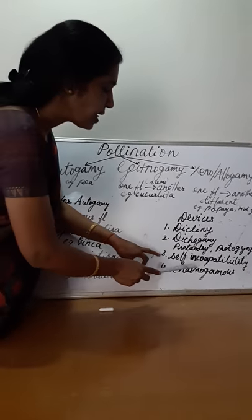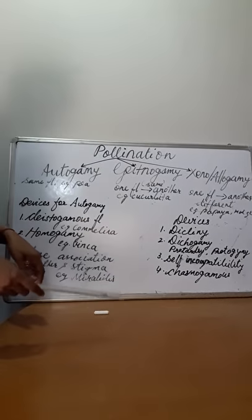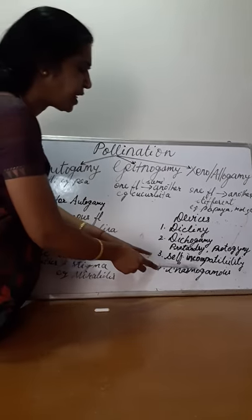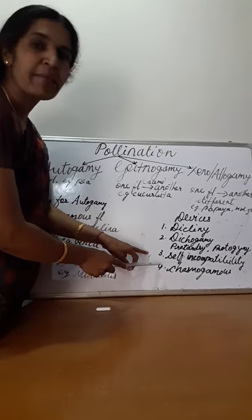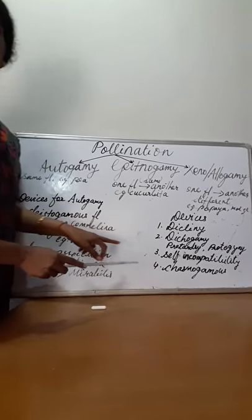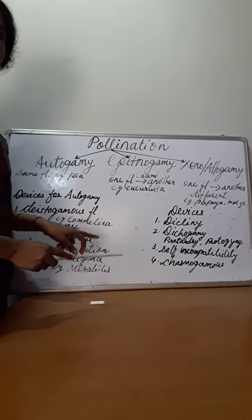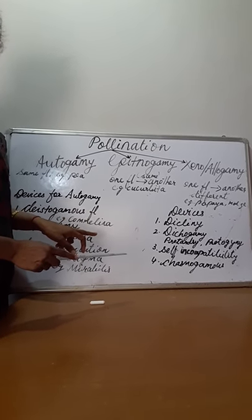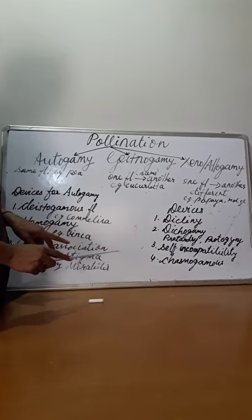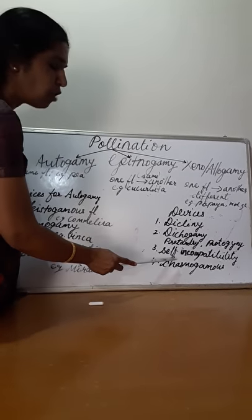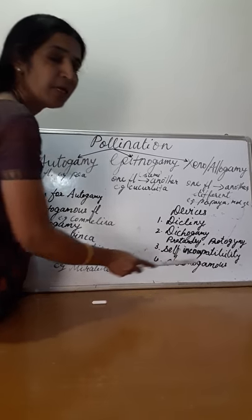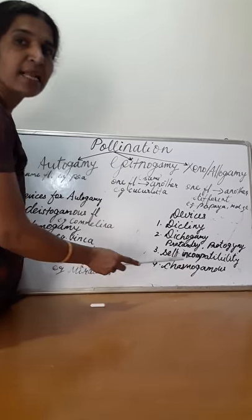The third one is self incompatibility or self sterility. This is a genetic mechanism where the pollen cannot grow on the stigma of the same flower, because both have the sterility genes. The stigma will not allow the pollen to grow on it. This is known as self incompatibility or self sterility.